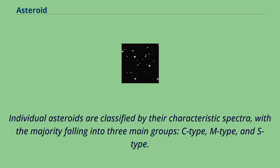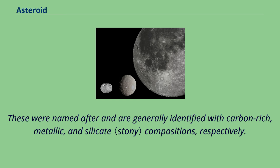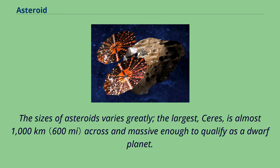Individual asteroids are classified by their characteristic spectra, with the majority falling into three main groups: C-type, M-type, and S-type. These were named after and are generally identified with carbon-rich, metallic, and silicate compositions, respectively. The sizes of asteroids vary greatly; the largest, Ceres, is almost 1,000 kilometers across and massive enough to qualify as a dwarf planet.